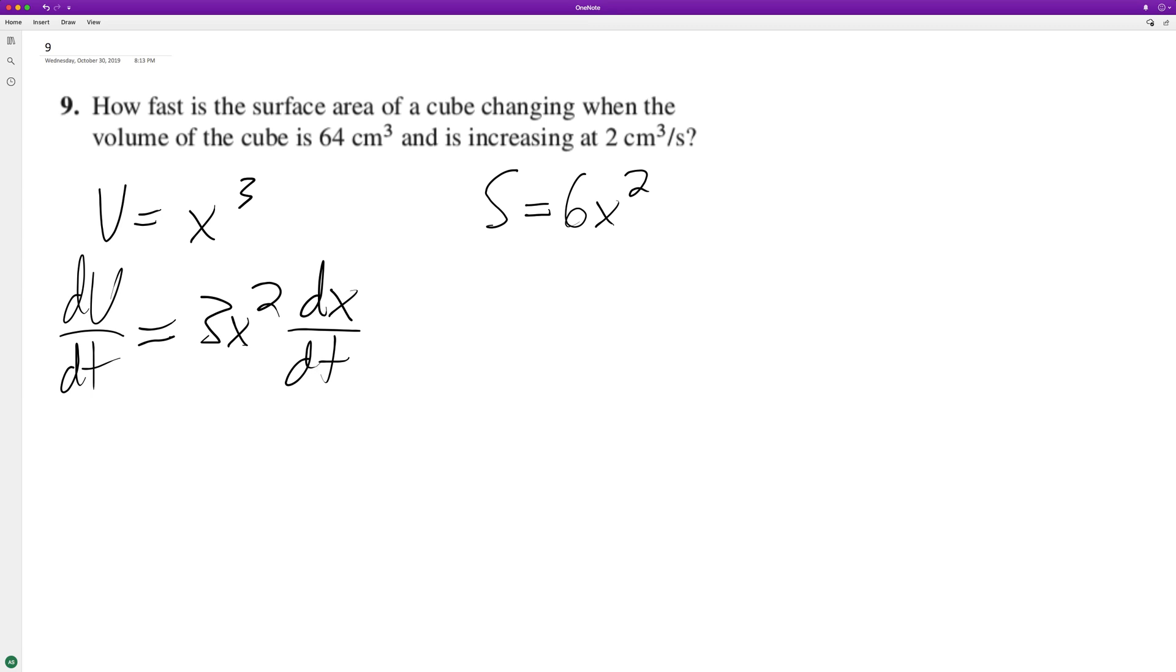So this is going to be 2 centimeters cubed per second equals 3... Let's see here. Actually this is like three equations, three unknowns. So divide three by three.